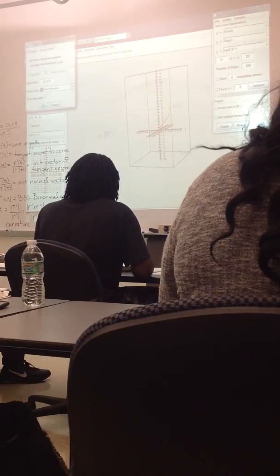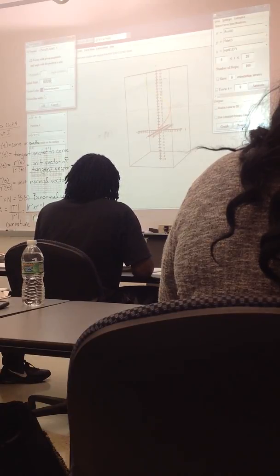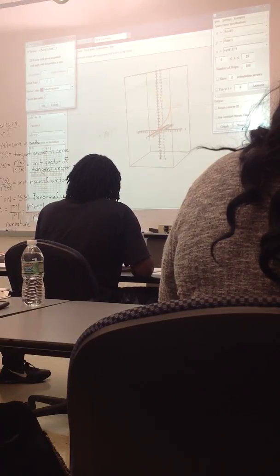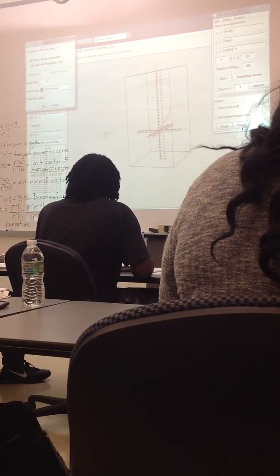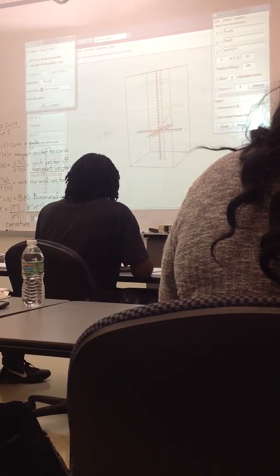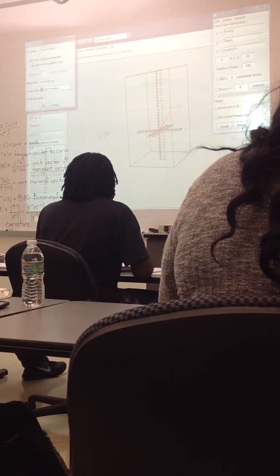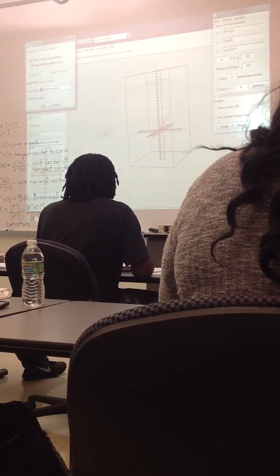Okay, then the tangent vector, we're going to graph it from that point, that terminal point. So 5 cosine of 1, 5 sine of 1, square root of 11 is my initial point.